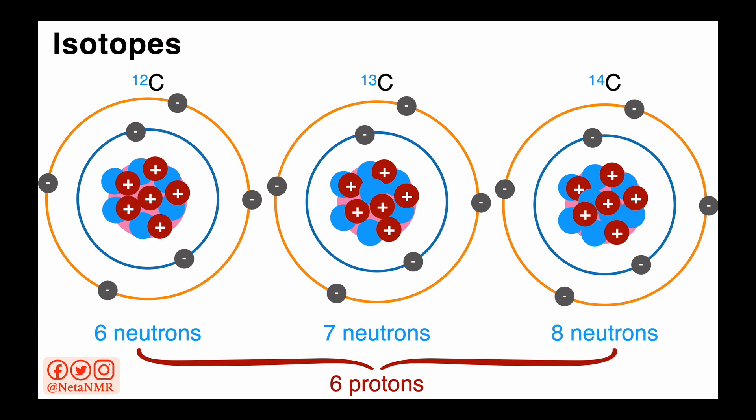And while the number of neutrons varies from one carbon isotope to another, the number of protons is the same for all of them. They all have 6 protons in the nucleus.